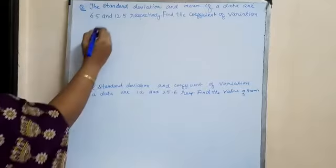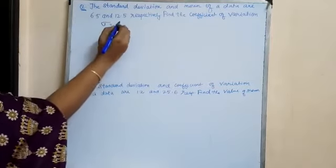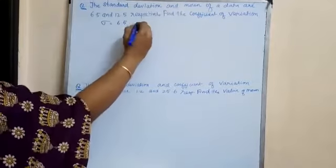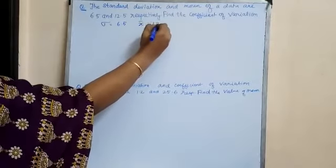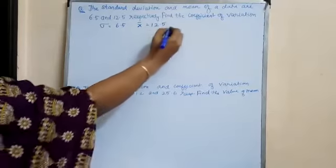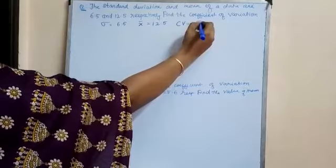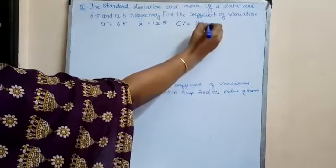Here we have sigma (standard deviation) is equal to 6.5 and mean x bar is equal to 12.5. So we are asked to find the coefficient of variation which is equal to sigma by x bar into 100.